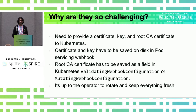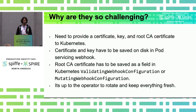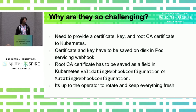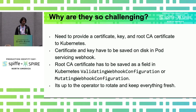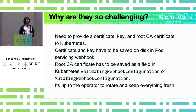What makes webhooks so challenging? The first challenge is that you have to provide a certificate, a key, and a root CA certificate. You have to provide all three pieces of information to Kubernetes and keep them up to date, fresh, and rotated — and it's up to the operator to do that. The certificate and key have to be saved on disk, which is another challenge. The webhook system still requires certificates to be on disk, and if anyone knows how to do webhooks without storing stuff on disk, I would love to hear how.